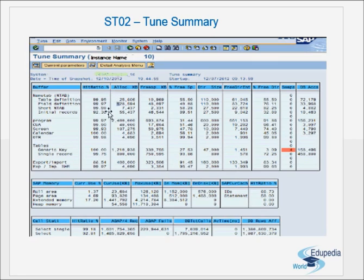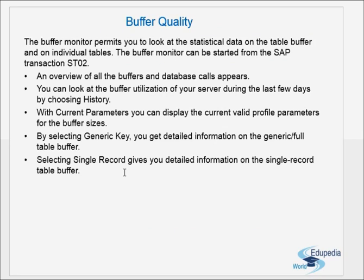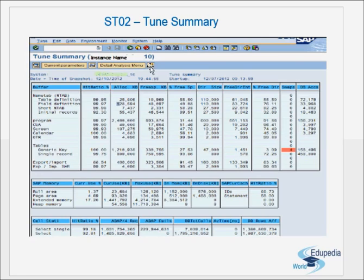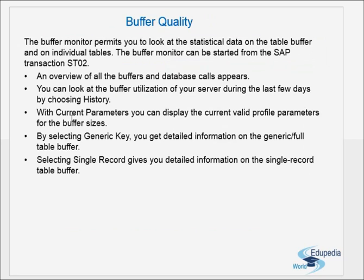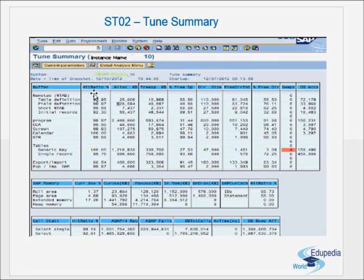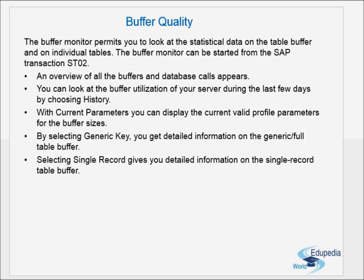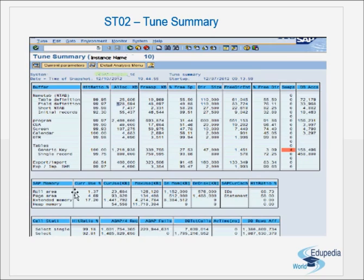From ST02 you can look at buffer utilization of your server during the last few days by choosing History. With Current Parameters you can display the current valid profile parameters of buffers — it shows you the sizes of various buffers. By selecting Generic Key you get detailed information on generic key buffering, and by selecting Single Record you get information on single record buffering. Double-clicking on each gives more details about those buffers.